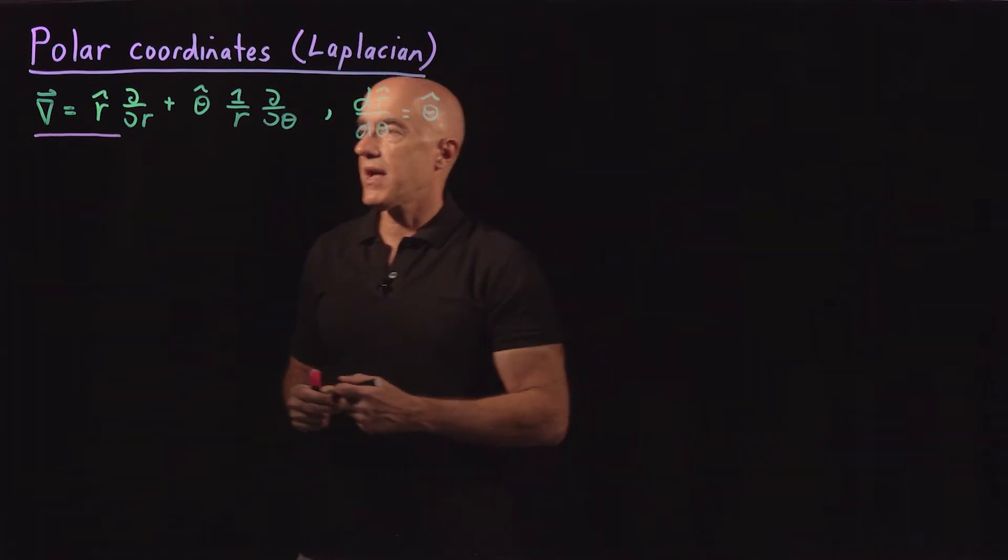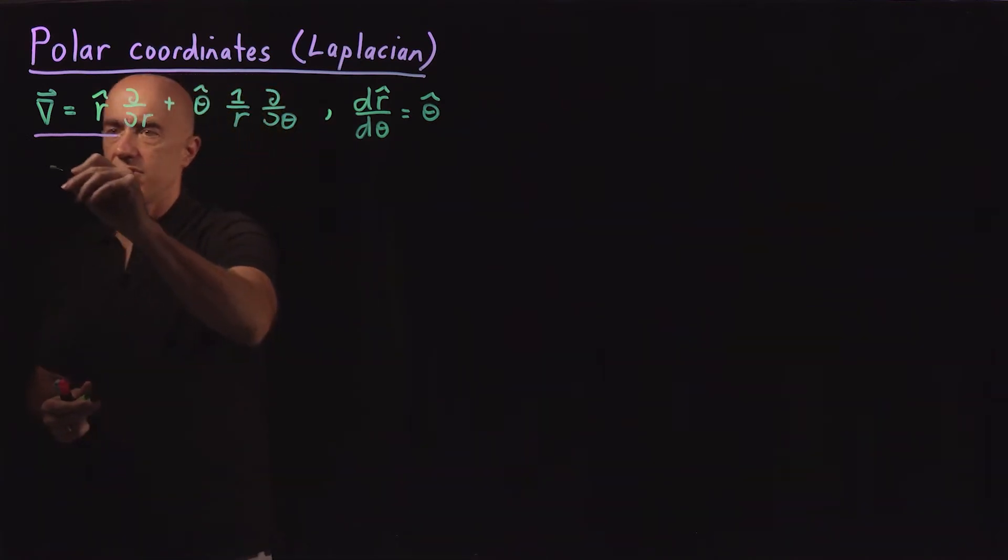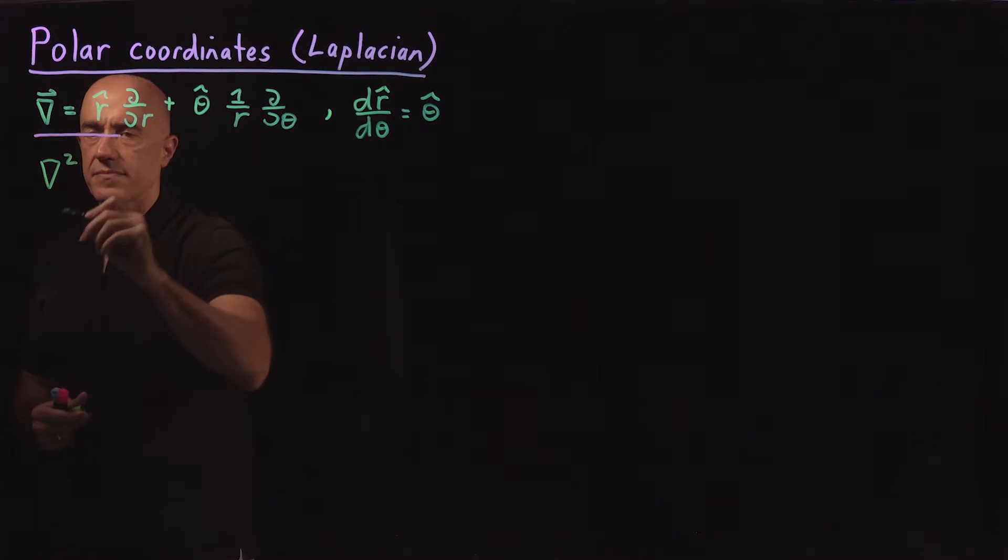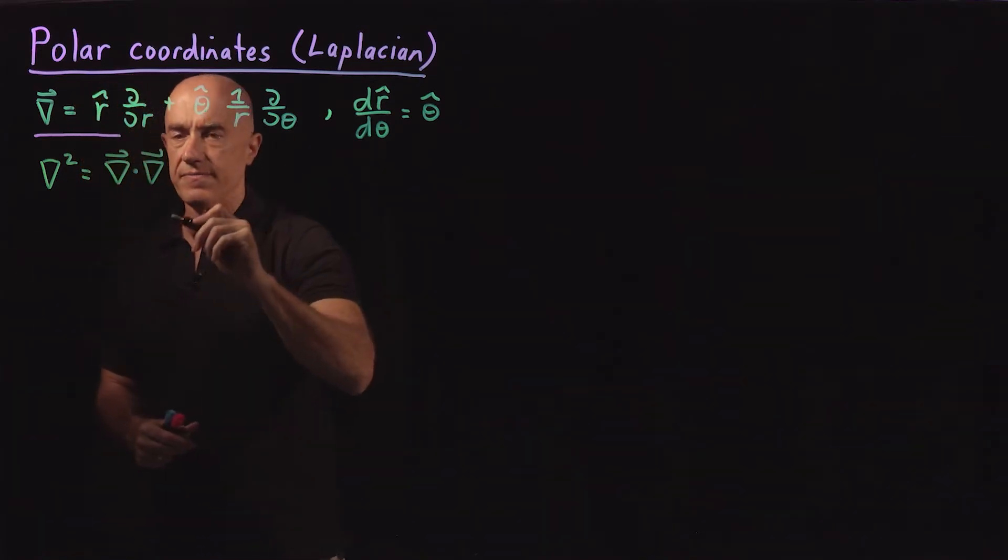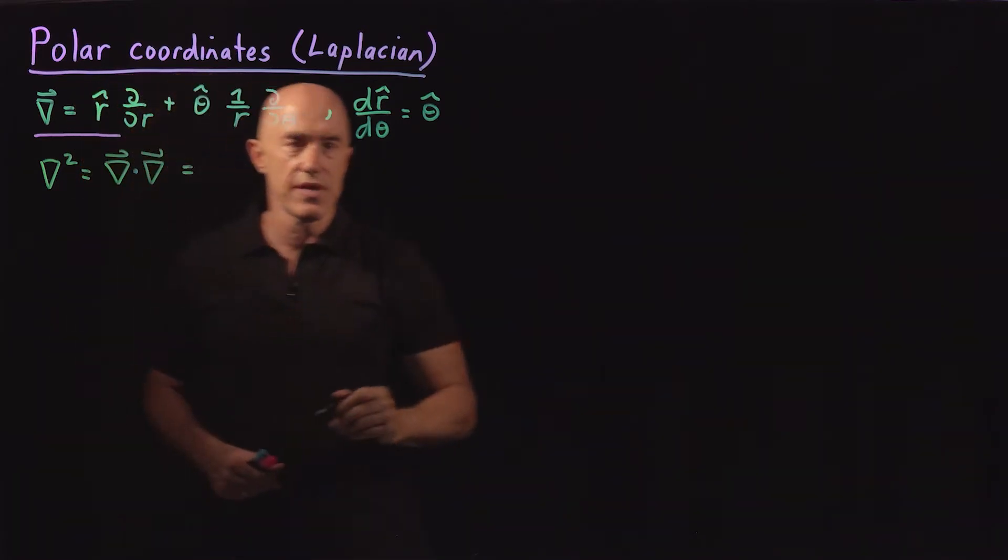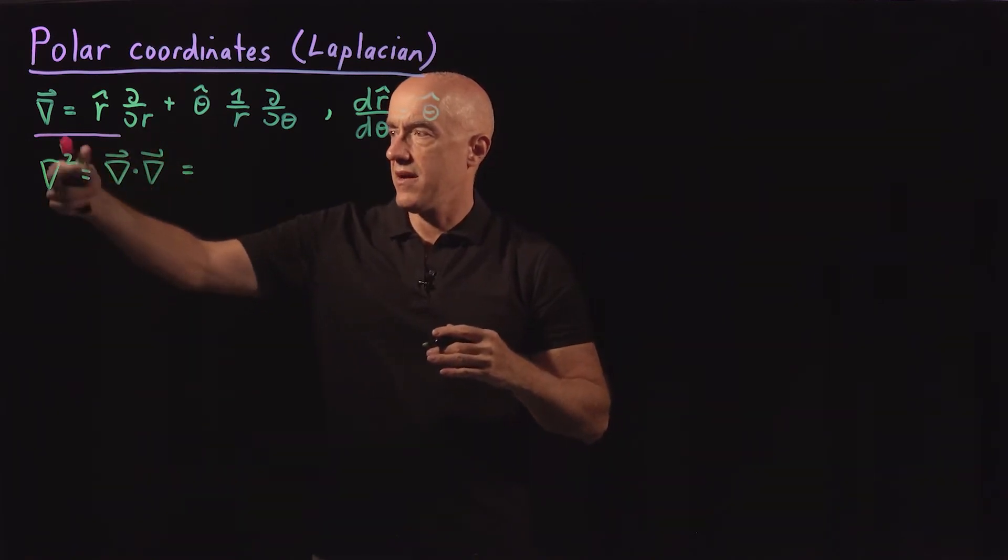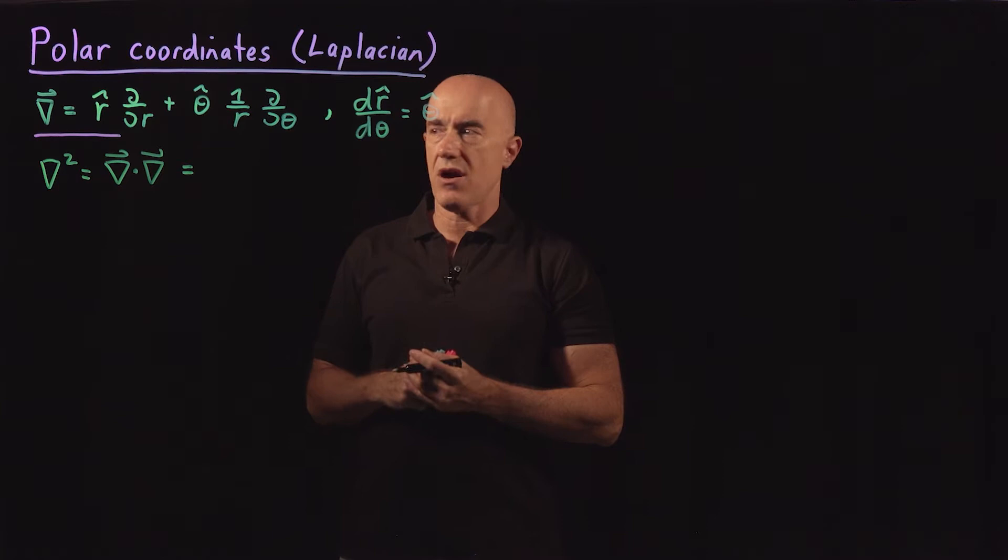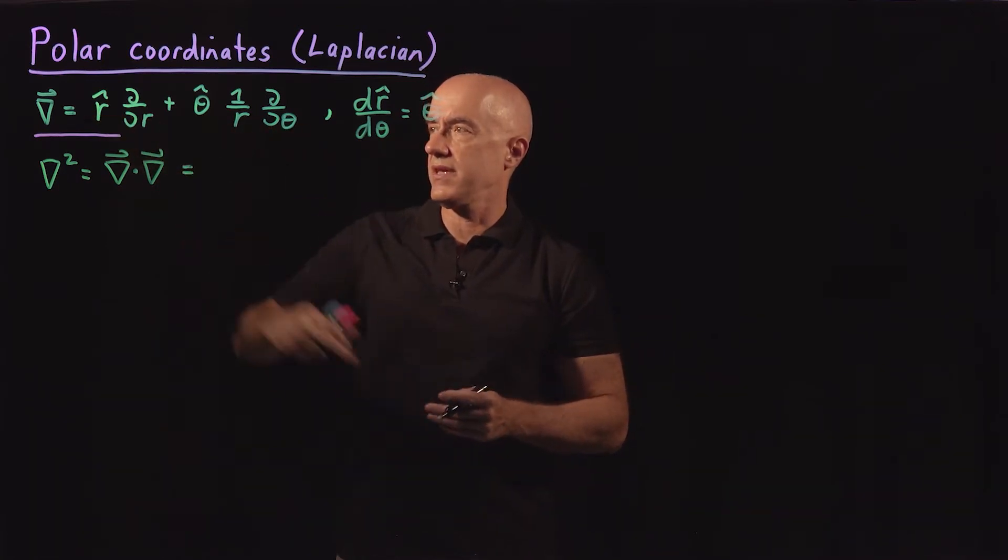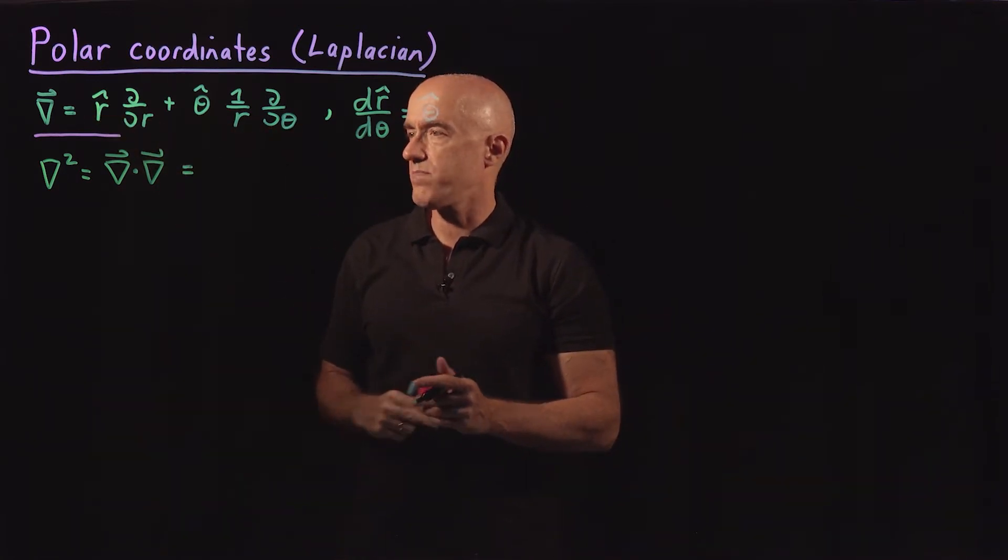So the Laplacian operator is what we write as del squared, which is essentially the dot product of the gradient with itself. We're going to do this without a function that it's operating on. We're just going to work the differential operator by itself.